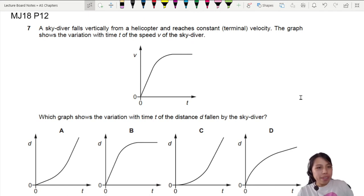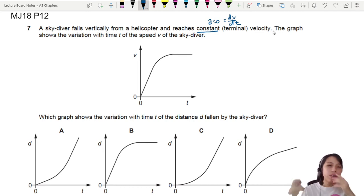Later only, we will go back to that nice summary of graphs. So this is a past paper question. What did they give us? A skydiver falls vertically from a helicopter and reaches constant terminal velocity. Constant velocity means no more acceleration. Constant means no acceleration. No rate of change of velocity. Graph shows Vt. Which graph shows Dt? How does the distance change compared to time?